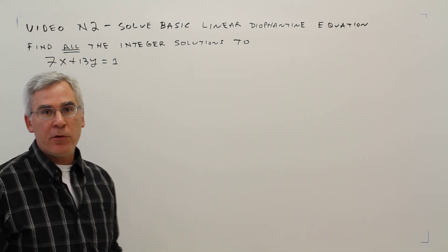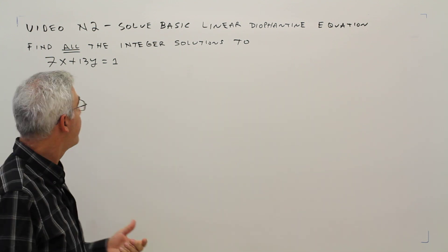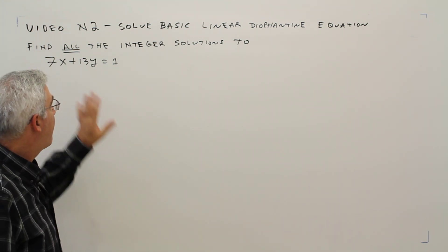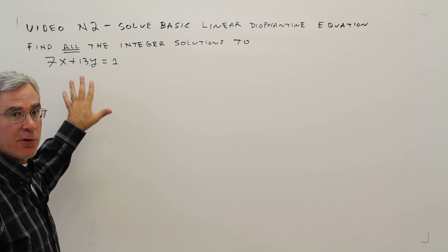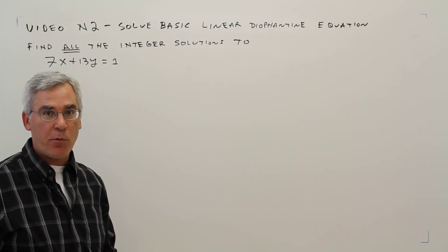Welcome to video N2. We're going to solve a basic linear Diophantine equation. Here's the problem: find all the integer solutions to 7x plus 13y equals 1.